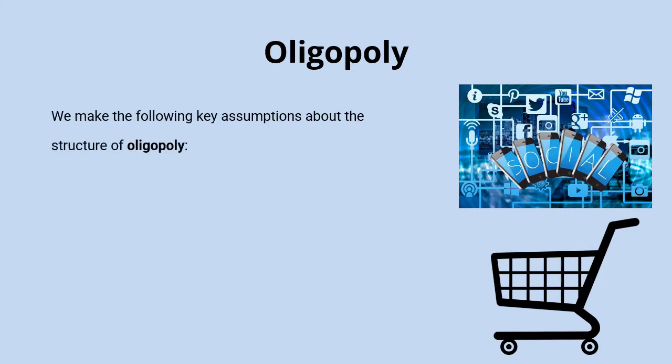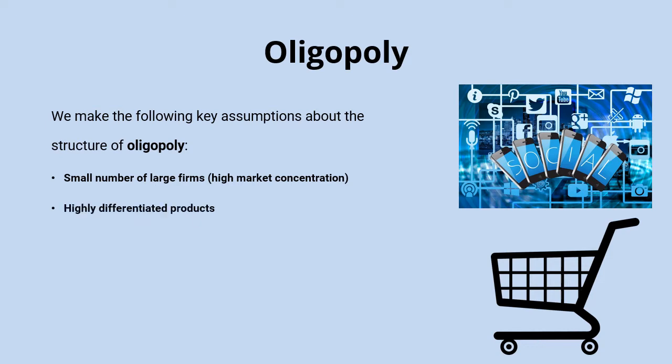Oligopoly is a market structure where there are a small number of large firms operating in that market, so there's high market concentration — maybe three, four or five really big firms controlling the majority of market share. These firms produce highly differentiated products, and this is actually one of the main ways that firms in oligopoly markets compete with each other: creating differentiated offerings to attract customers away from rivals.